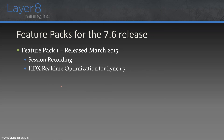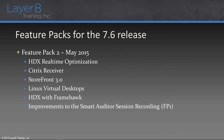Feature Pack 2 came out at the end of May/beginning of June and brought in additional HDX real-time optimization features created via policy. It released Receiver 4.3. Storefront 3.0 came out. It brought in support for Linux virtual desktops — users can now be deployed Linux virtual desktops via the Storefront access point. They also brought in HDX with Framehawk to support mobile wireless users. And they added in some additional Smart Auditor session recording features, further enhancing what we saw with Feature Pack 1.